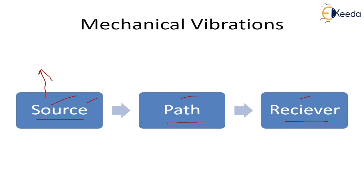The second thing that can be done is on the path. When vibration is created by the machinery and sent to the receiver, the path — which may be structural or airborne — is where vibrations can be controlled. This is done by the use of isolated springs or inertia blocks. The idea is to make the natural frequency of the machine on its foundation below the excitation frequency.